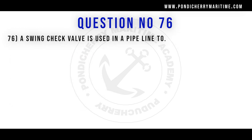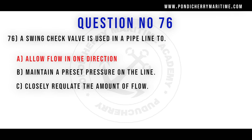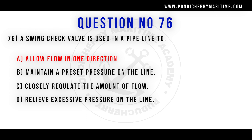Question 76: A swing check valve is used in a pipeline to do what? Option A: allow flow in one direction. Option B: maintain a preset pressure on the line. Option C: closely regulate the amount of flow. Option D: relieve excessive pressure on the line. Correct answer is Option A: allow flow in one direction.